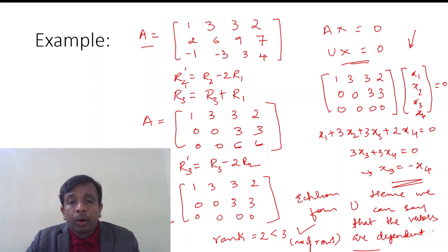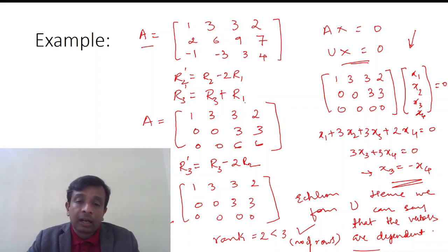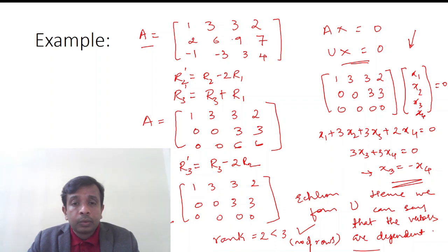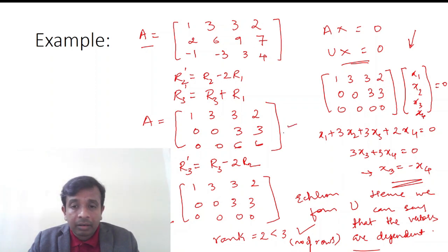We perform two row operations: R2' = R2 - 2*R1 and R3' = R3 + R1, which results in the matrix 1 3 3 2 / 0 0 3 3 / 0 0 6 6. Verifying: R2' gives 9 - 6 = 3 and 7 - 4 = 3. R3' gives -1+1=0, -3+3=0, 3+3=6, 4+2=6. Both verified.